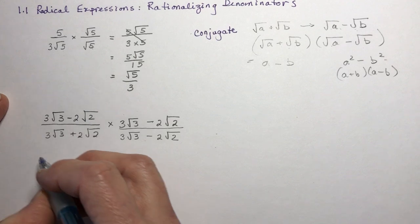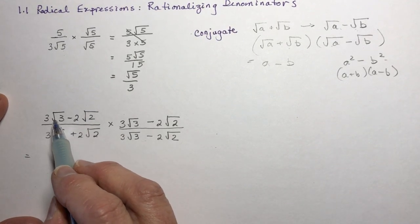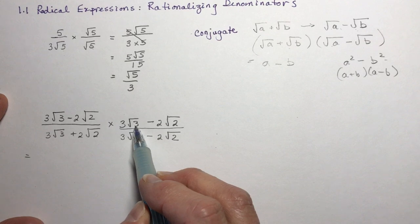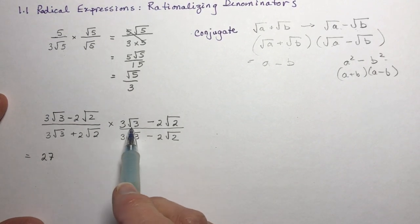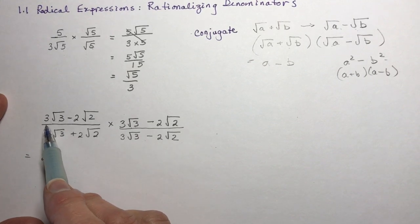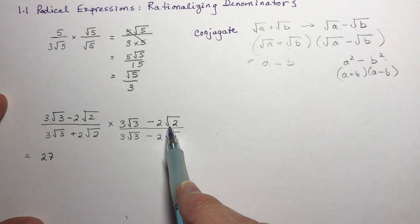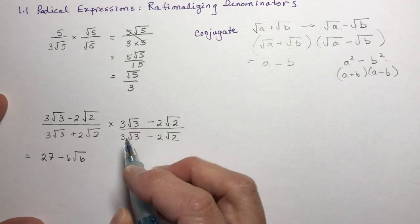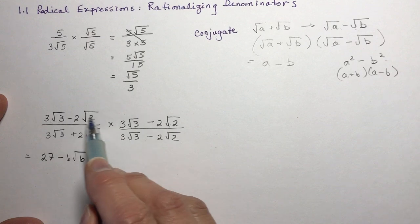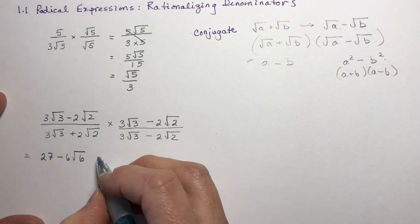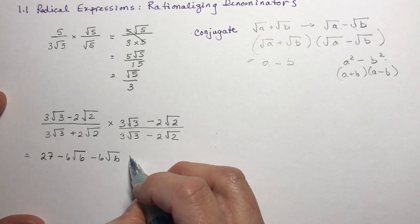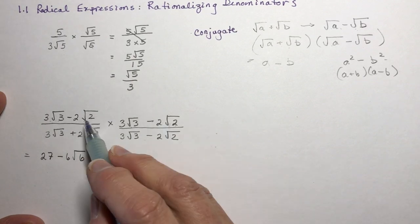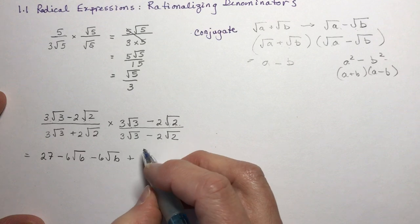And now you need to expand. In the numerator, I had 3 root 3 times 3 root 3 — that's 9 times root 9, or 9 times 3, which is going to be 27. Watch: 3 times 3 was 9, root 3 times root 3 is 3, so 9 times 3 is 27. And now if I multiply this times this one, I'm going to get minus 6 root 6. This is like expanding a binomial, so that's going to be minus 6 root 6. And minus 2 root 2 times minus 2 root 2 — 2 times 2 is 4, root 2 times root 2 is 2, so 4 times 2 would be 8.